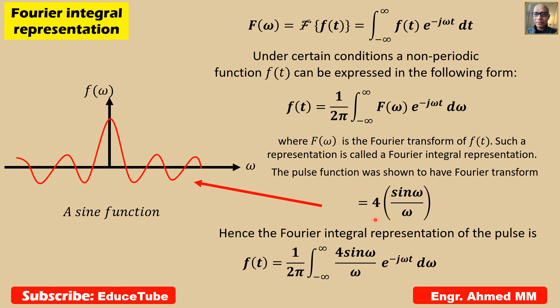Now, if we replace F(omega) in this position by this Fourier transform, the Fourier integral representation of the pulse becomes this. That was our target. So that's all for today, and thanks for watching.